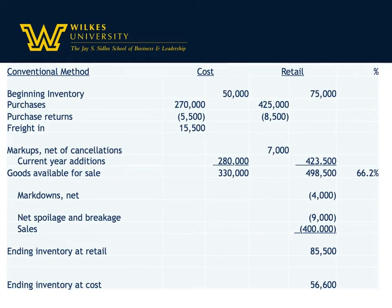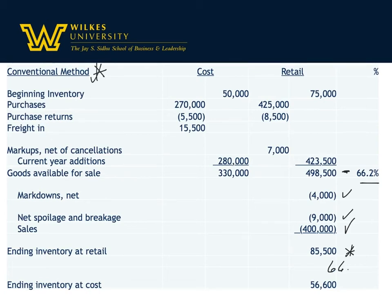So how do we find ending inventory at retail? We can't have more than $498,500, since that's the maximum available. Remember, the conventional method includes markups but handles markdowns separately — they come later and aren't used in computing the percentage. We take goods available for sale, subtract markdowns, subtract spoilage and breakage, and subtract sales. What's left is ending inventory at retail. Multiply that by 66.2% to get ending inventory at cost.